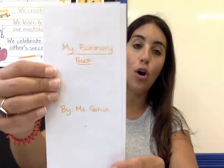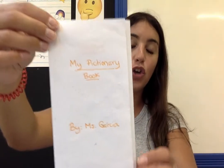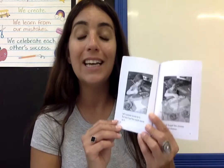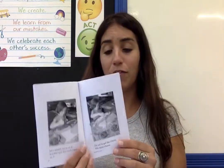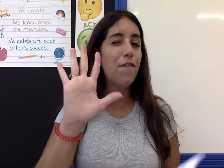Then, once you read the whole book one time at least, you will make your own Pictionary book. You will choose five words from your book that you would like to include in your Pictionary book. Think of five words that were difficult in this book. Pensa em cinco palavras que foram difíceis nesse livro e que são importantes para esse livro.